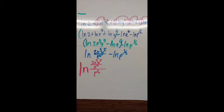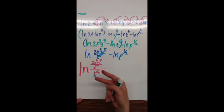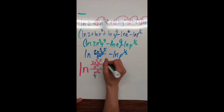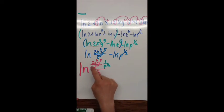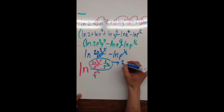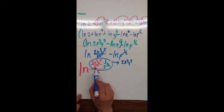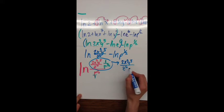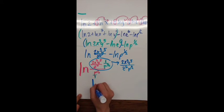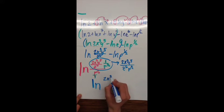We want to simplify this complex fraction — a fraction within a fraction. Remember p to the one half is really over 1, so I flip and multiply because dividing by a fraction means multiplying by the reciprocal. This gives 2x cubed y to the 5th times 1 in the numerator, which is just 2x cubed y to the 5th, over z to the 6th times p to the one half. So the answer is natural log of 2x cubed y to the 5th over z to the 6th p to the one half.